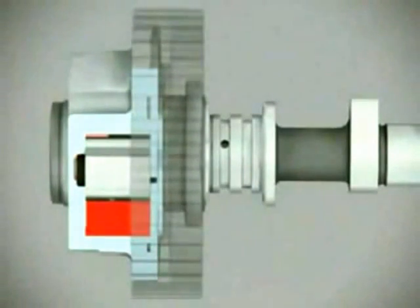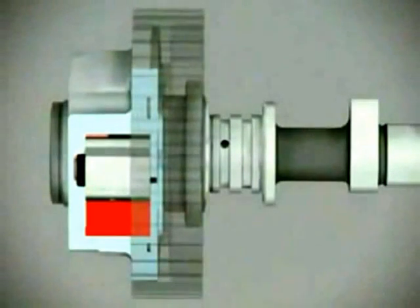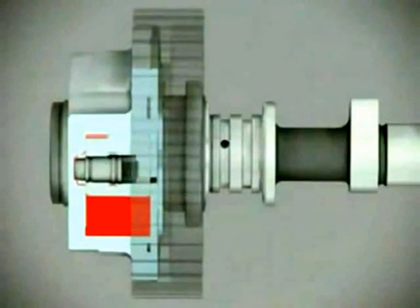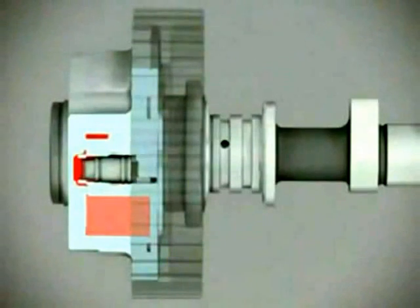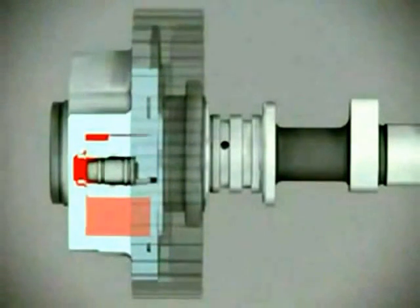The TI-VCT system being in either active or passive mode is controlled by the powertrain control module. Depending on the engine's temperature, speed and load situation, the powertrain control module activates the VCT system. Activation is done by exposing the locking pin to pressurized oil, which will push it down and release the rotor vane from the housing.